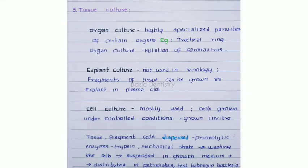The third method is the tissue culture method. There are three major types: the first is organ culture, used mainly for highly specialized parasites of certain organs. For example, tracheal ring organ culture is done for isolation of coronavirus. The second is explant culture, where fragments of tissue can be grown as explants in plasma clot; it is rarely used and does not give very useful results in virology.